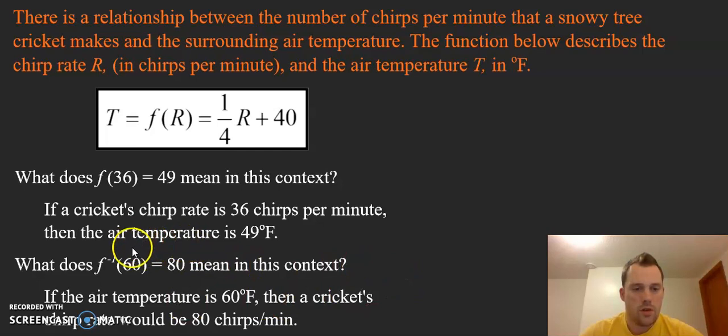We can actually plug both of these values in for R and see which one works. If we plug 80, which we say is the chirp rate, in as R: 80 times 1/4 is 20, plus 40 is 60, and that will give us 60 degrees.